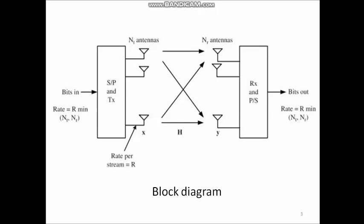This shows the block diagram representation of a spatial multiplexing MIMO system with n_t number of transmit antennas and n_r number of receive antennas. As you can see, a high rate data stream is given as input to the serial-to-parallel converter, which divides it into m number of parallel data streams. These data streams are simultaneously transmitted using antennas, and at the receiver section, using n_r receive antennas, the received data is applied to the parallel-to-serial converter, converting the parallel data stream back into serial data for further processing.